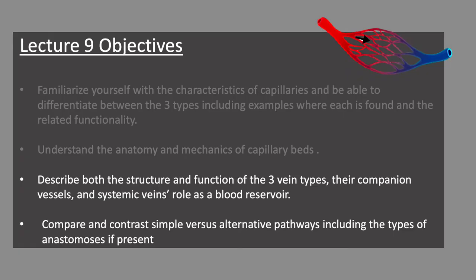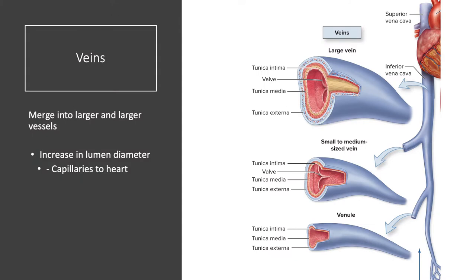Moving on to veins, we're going to look at the structure and function of the three different vein types, their companion vessels, and the systemic veins' role as a blood reservoir. Veins carry deoxygenated blood back to the heart after oxygenated blood was delivered to tissues via arteries and the exchange made at capillary beds. Veins merge into larger and larger vessels as we return to the heart, with increasing vessel size and lumen diameter.